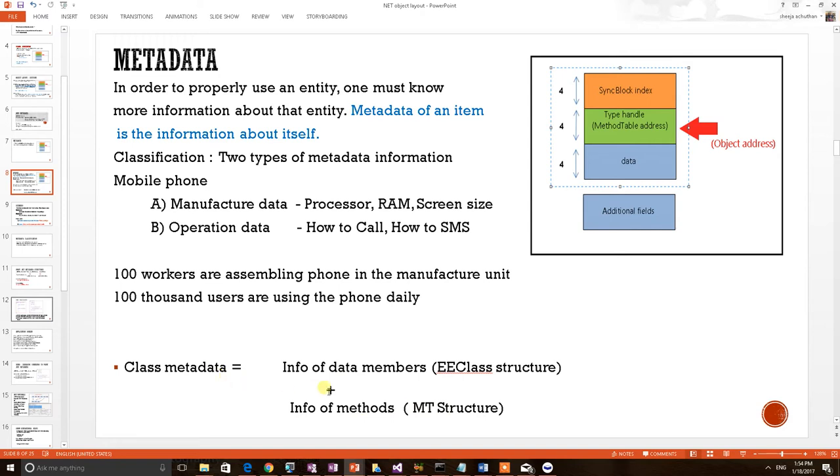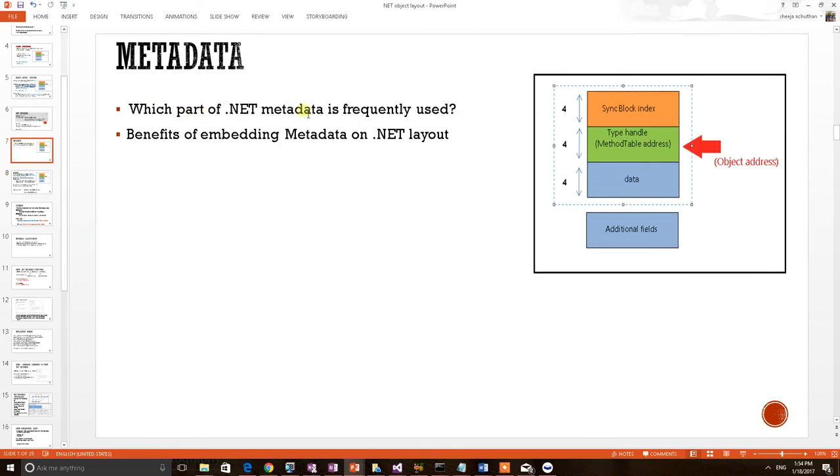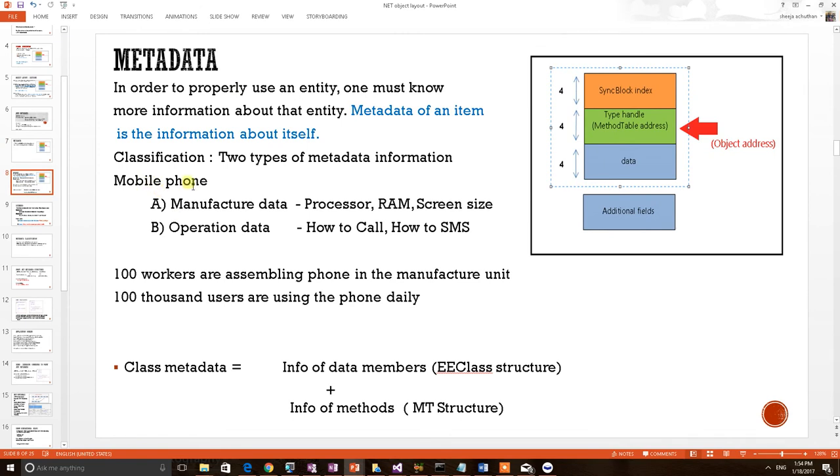Now we learn that the class metadata has been separated into two different structures. But now we are interested which part of .NET metadata is heavily in use. For that, we will again take mobile phone example.